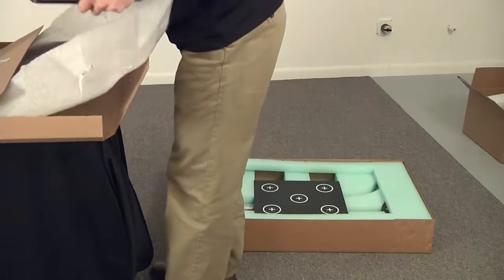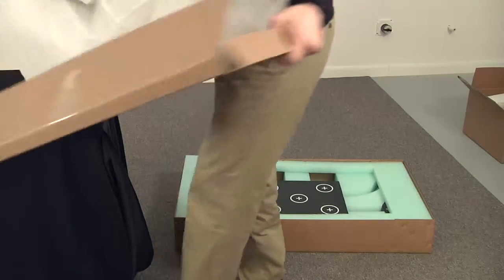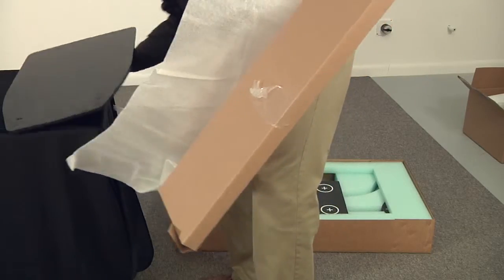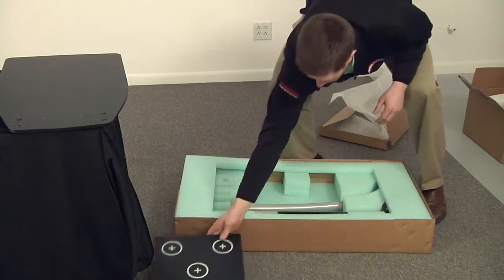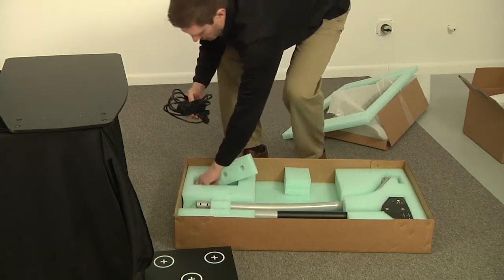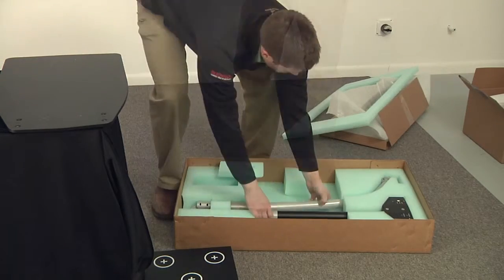In a matter of minutes, iDimension will be fully assembled and ready to get to work. Unpack all items from the box. This includes the scanning head, base plate, calibration object, power supply and cord, assembly screws, and pole assembly.